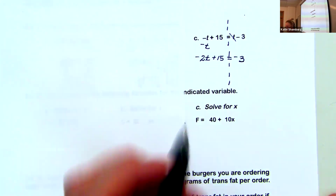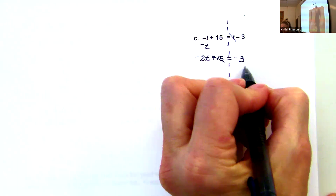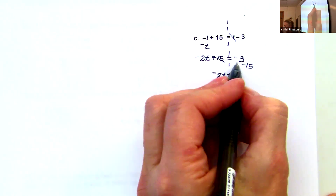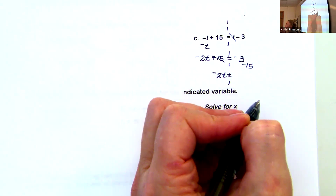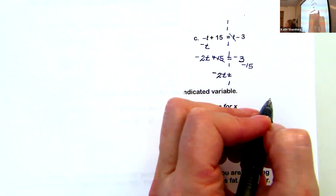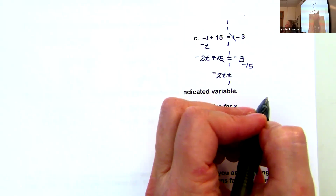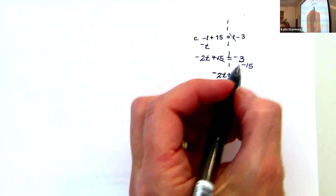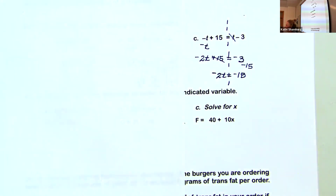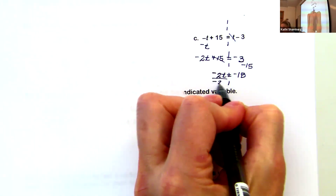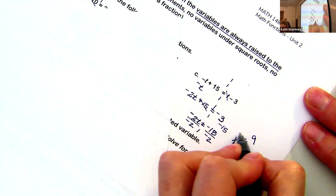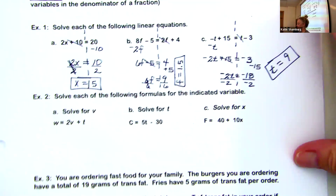Now I've got all t's on one side. I want to move the plus 15, so I subtract 15. I'm left with negative 2t equals negative 18. If they're both negative — same sign — add and use that sign, giving negative 18. Then divide both sides by negative 2. Negative divided by negative is positive, so we get positive 9. t equals 9.